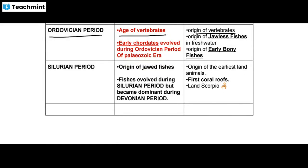The Ordovician period is the age of vertebrates. The origin of jawless fishes and early bony fishes occurred in the Ordovician period. Early chordates evolved during the Ordovician period of the Paleozoic era. The Ordovician period is the age of vertebrates, while the Cambrian period is the age of invertebrates.